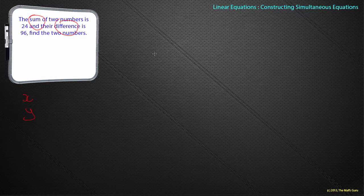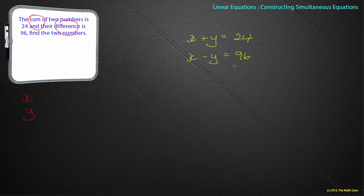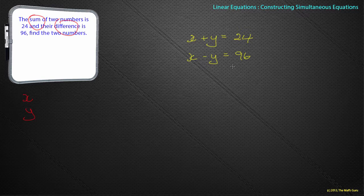Looking at this, they give us two ideas. The sum of two numbers is 24. So what they're effectively telling me is x plus y is equal to 24. And the difference is 96. So x minus y must be 96. That doesn't make any sense whatsoever. How can two numbers add to be 24, and you have a difference of 96?